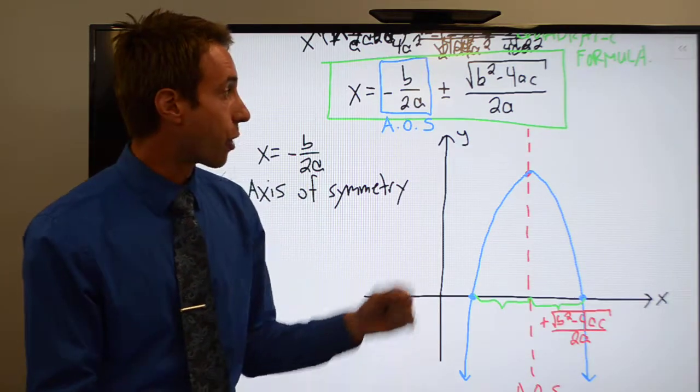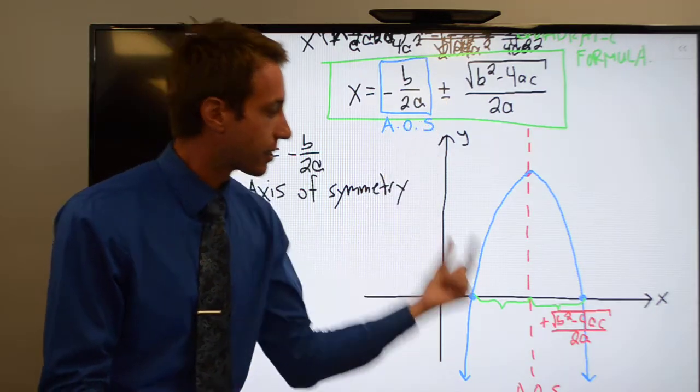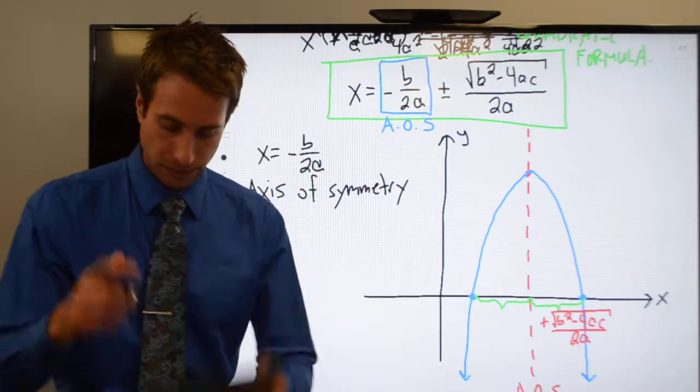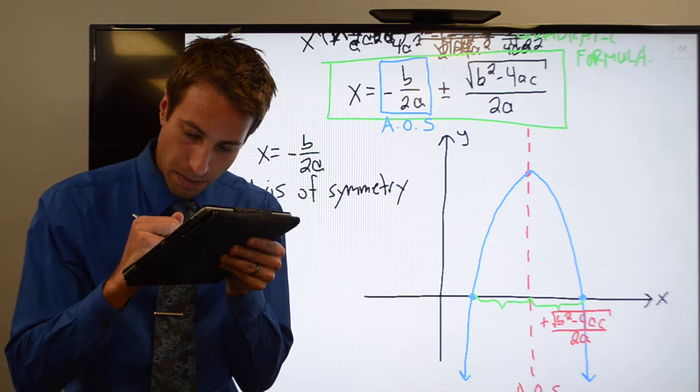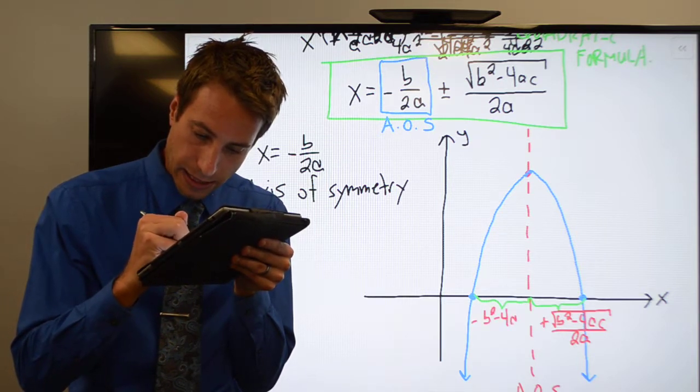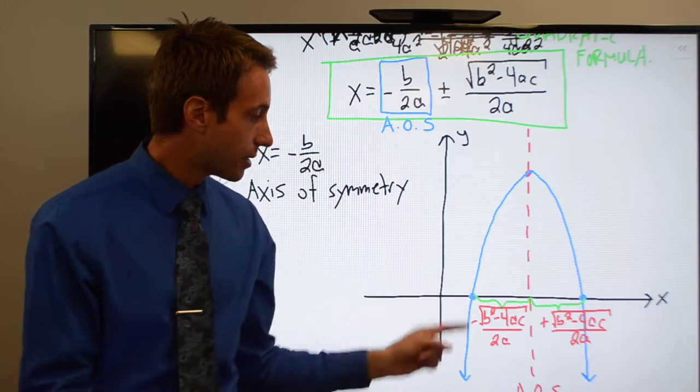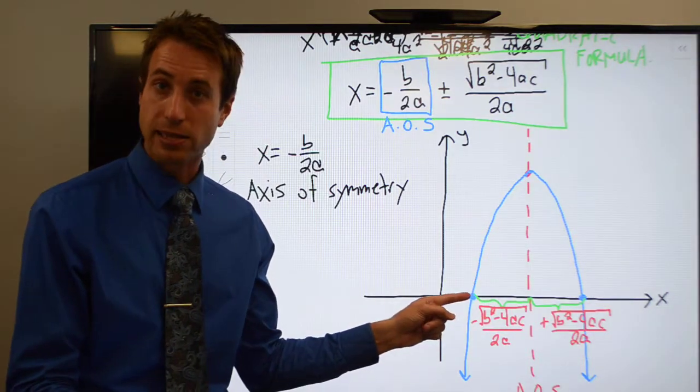Then the quadratic formula finds the axis of symmetry and subtracts that distance, minus square root of b squared minus 4ac all over 2a, to find the other x-intercept.